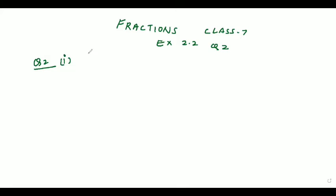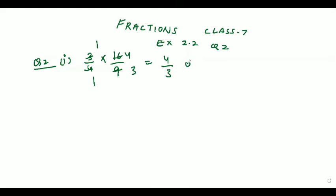The first part is given as 3/4 into 16/9. As we know, it will get cancelled. 3 ones are 3, 3 threes are 9, 4 ones are 4, 4 fours are 16. So the answer is 4/3, which can also be written as 1 whole number 1/3. Hope the first part is clear.